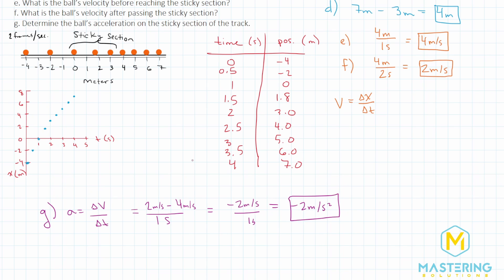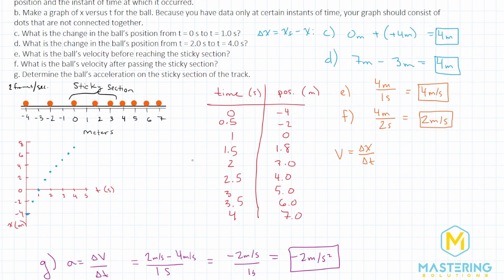Some students would miss the negative because they do it quickly in their head — they see four and two seconds and think the total change is positive two. That's why it's helpful to write it out explicitly. So here are your answers: negative two meters per second squared for the acceleration, four meters for each change in distance, the velocities of four and two meters per second, along with the data table and the graph.